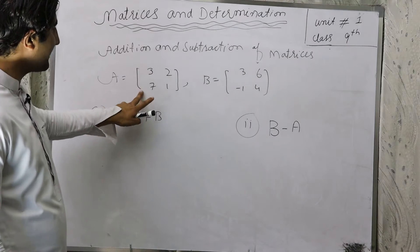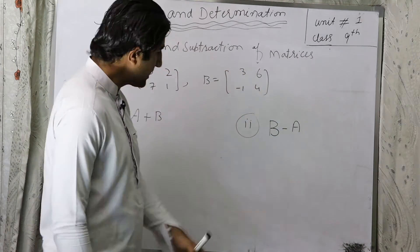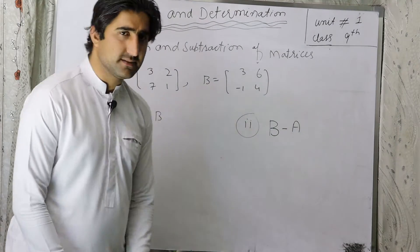Now, A is given. This matrix is 3, 2, 7, 1. B is given. We have 3, 6, minus 1 and 4. So I have two questions given: A plus B and B minus A.